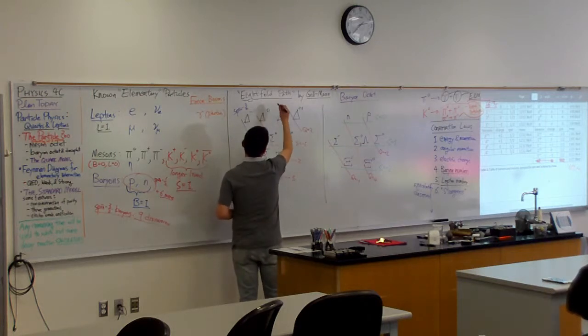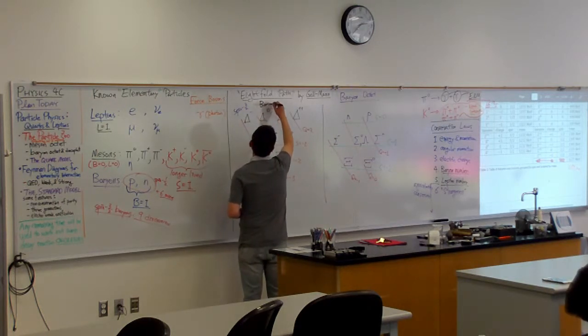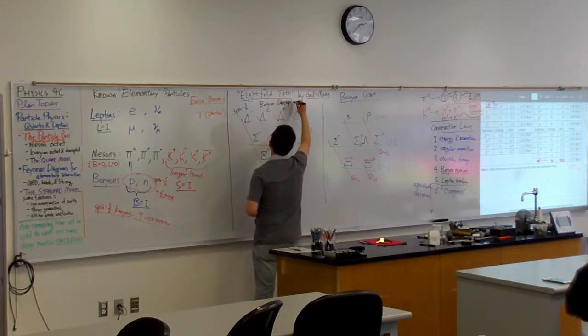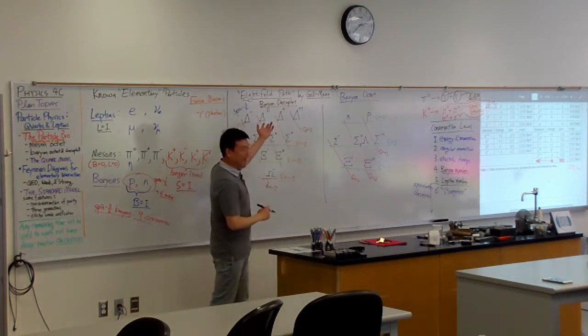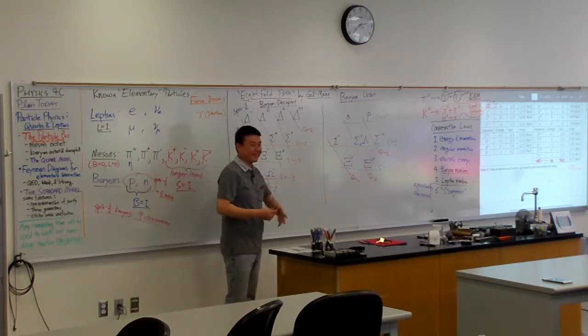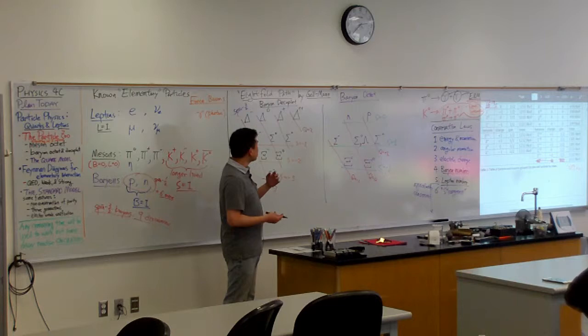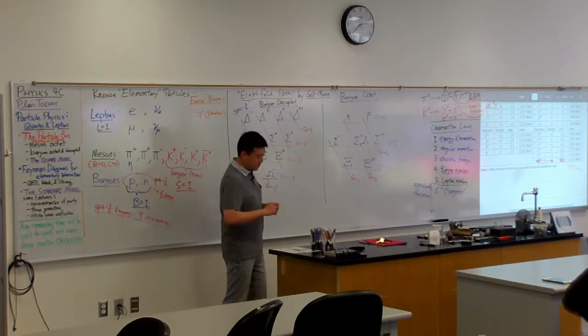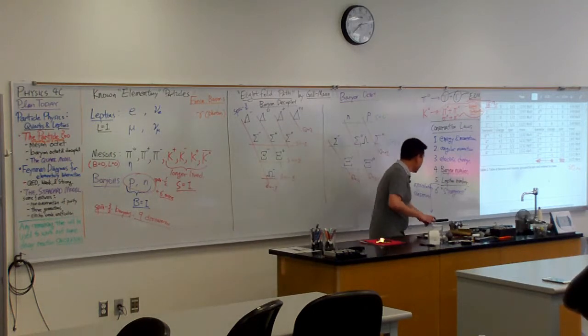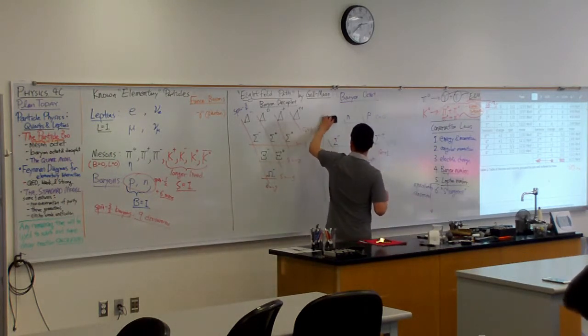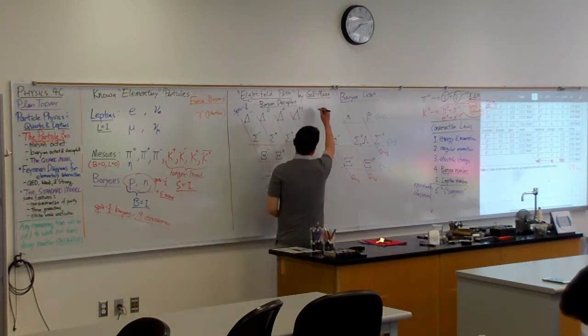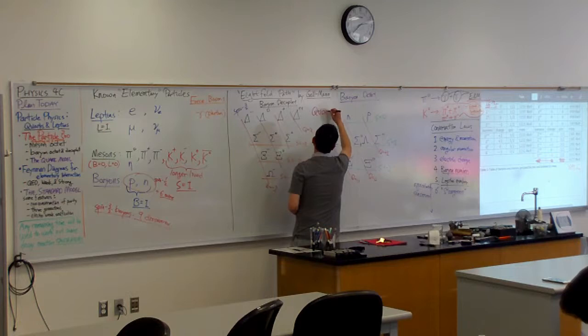So this is what you would call the Baryon Decuplet. So it's named after the eight-fold path, but that's just mysticism that inspired the name. It's not actual physics. So the underlying theory is what Gell-Mann called it. This is around the time when people were becoming very inventive about names. He based it on a model he called the Quark Model.